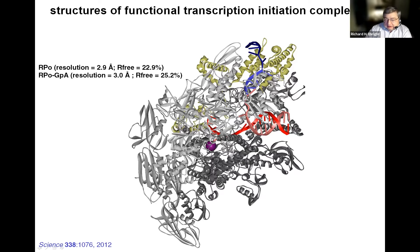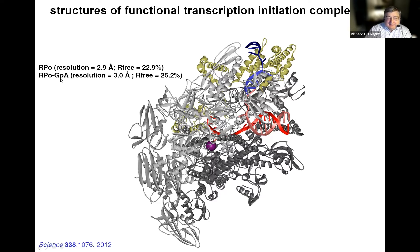The RPO comprised a bacterial RNA polymerase, shown in gray, with its active center catalytic magnesium as a violet sphere, bound to the initiation factor sigma, shown in yellow, bound to a synthetic nucleic acid scaffold representing the unwound portion of the promoter—the so-called transcription bubble—and the downstream DNA duplex. The second structure was the same, but also bound to a dinucleotide RNA primer GPA, representing the complex engaged in primer-dependent transcription initiation.